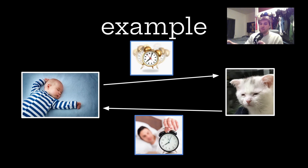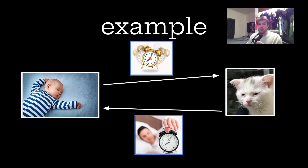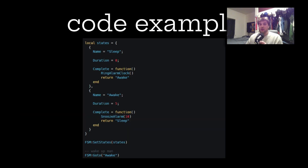Let's look at an example. I'm fast asleep and it's 7 a.m. and I gotta get up and go to class. My alarm clock goes off and I hit the snooze and go back into the sleep state. We do this until it's eight o'clock and I really have to get up. Let's look at a code example though — there are two states: sleep and awake.